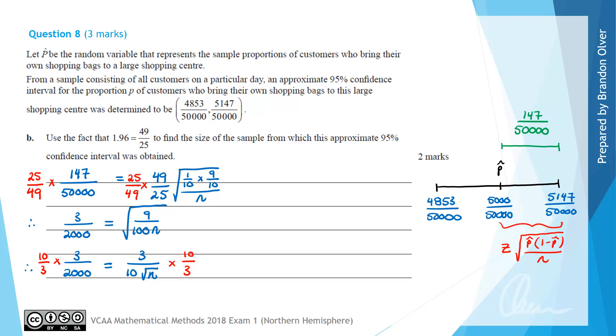Next we multiply both sides by 10/3. The 3's cancel and one factor of 10 cancels, leaving 1/200 equals 1/sqrt(N). Therefore, sqrt(N) equals 200, and squaring both sides, N equals 40,000.